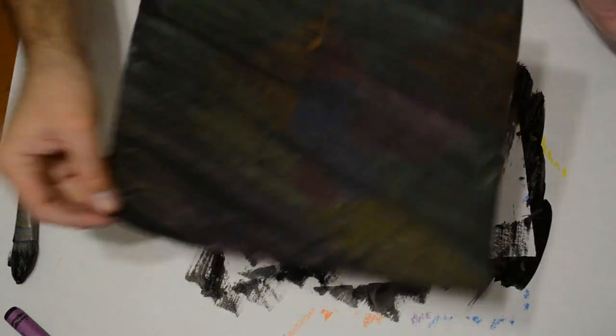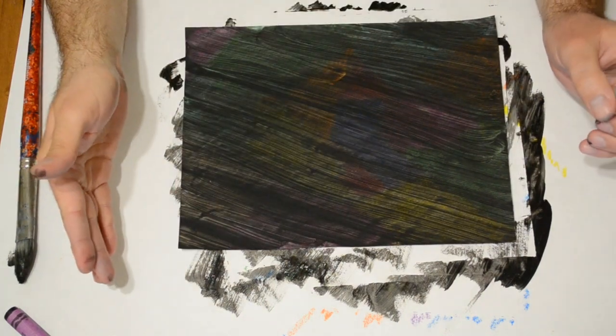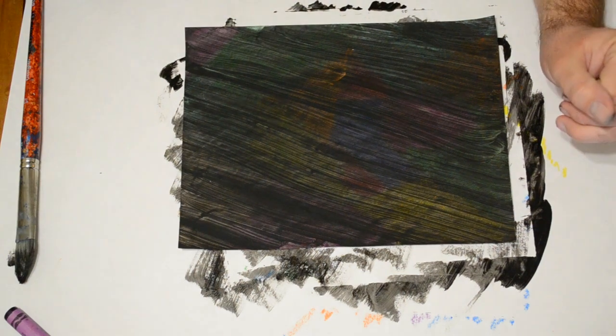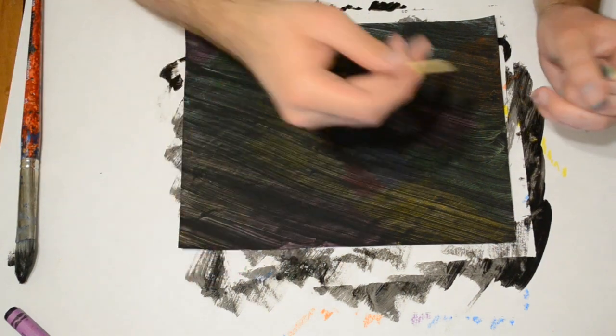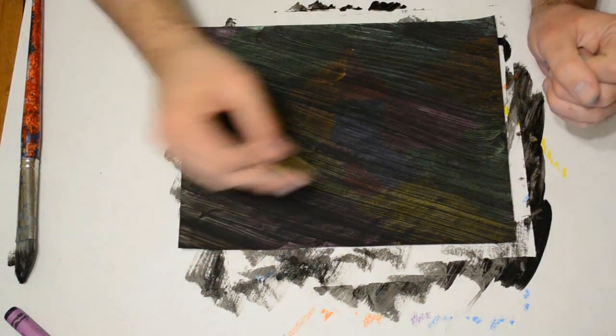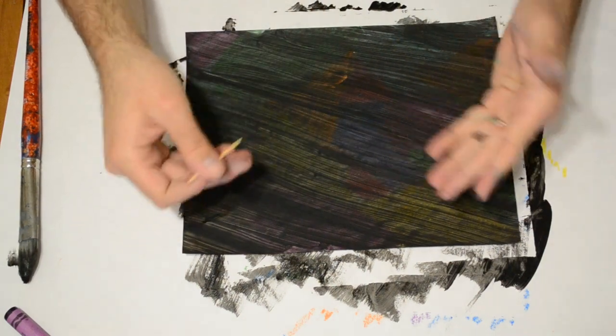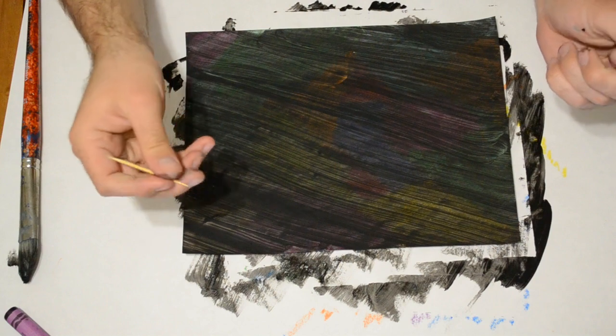Now here is one I did a little earlier. Like you can see it is all dry. I have black all over it. This is when your toothpick or scraping tool comes in. You are just going to use it to scrape whatever image you want. Wherever you scrape, the color will come through.